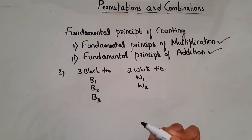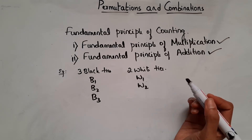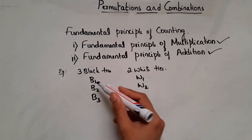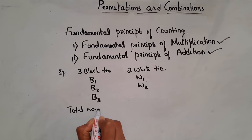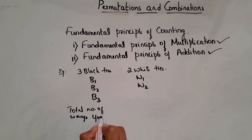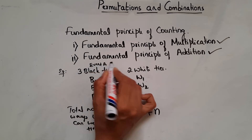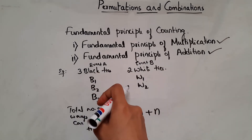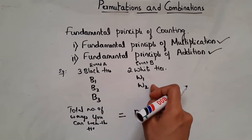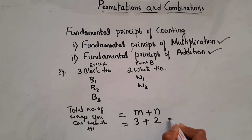You will not wear one tie upon another, right? Either you will wear B1 or B2 or B3, or you can wear W1 or W2. So how many total possibilities are there? 5, correct? So here the total number of ways you can wear this tie is M plus N. If I take choosing a black tie as event A — we have 3 different types — and choosing a white tie as event B, then the total number of ways is M plus N. So here we have 3 plus 2, that is 5 possibilities.